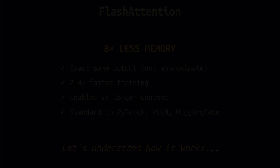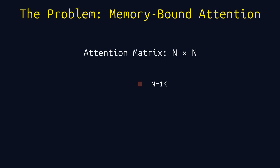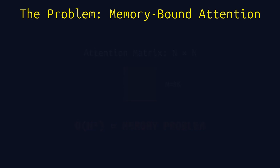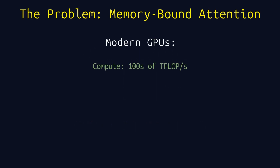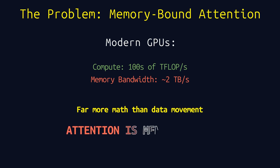The problem with standard attention is that it's memory-bound, not compute-bound. Look at how the attention matrix grows: at sequence length 1,000 it's manageable, but at 2,000, 4,000, 8,000, we're storing a massive N-squared matrix in memory. Modern GPUs have about 500 times more compute throughput than memory bandwidth — 1,000 trillion FLOPS per second but only 2 terabytes per second of memory bandwidth. This means attention spends most of its time waiting for memory transfers, not doing math. It's memory-bound.